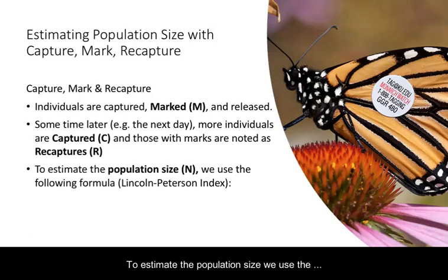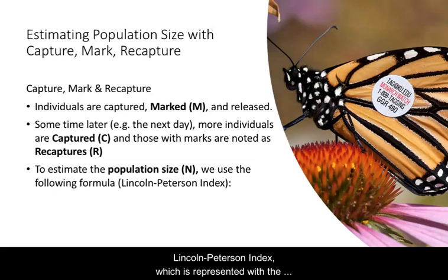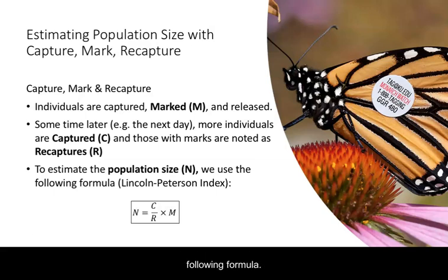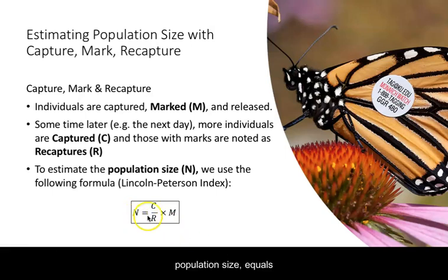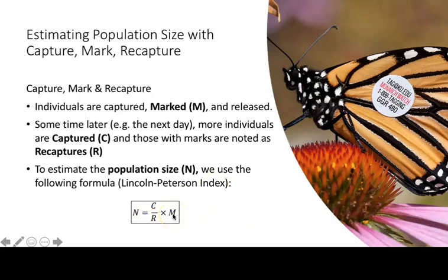To estimate the population size we use the Lincoln-Peterson index, represented with the following formula: N, which is the estimated population size, equals C divided by R, times M.